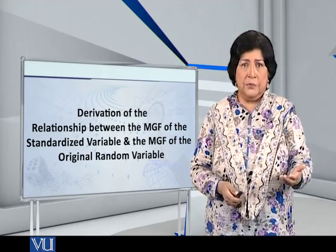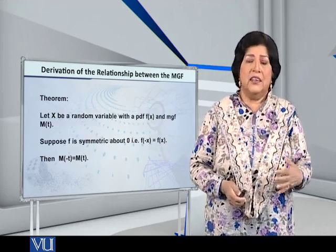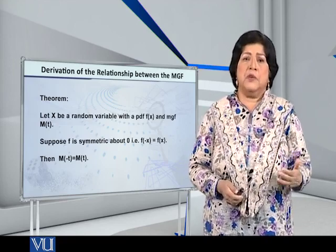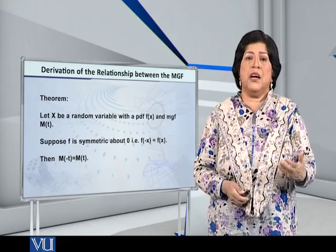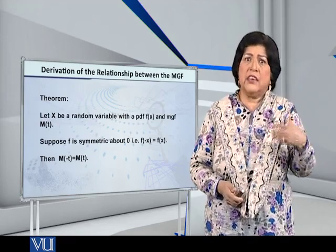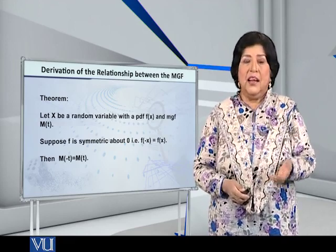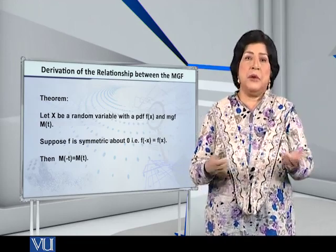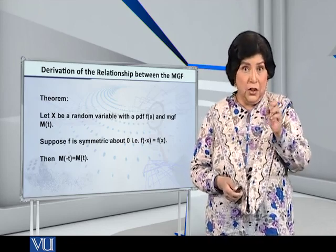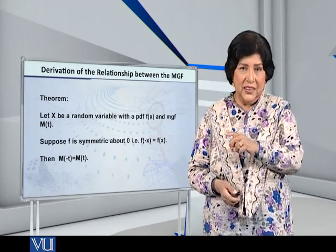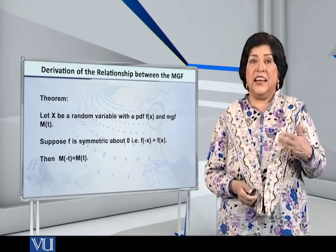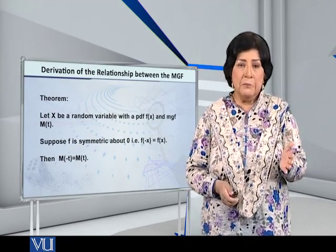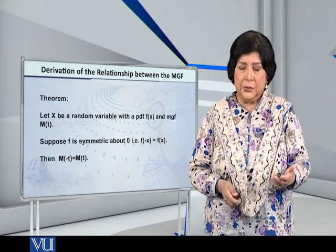The theorem goes like this: Let X be a random variable with a PDF f(x) and MGF M(t). And let f(x), in other words, be symmetric about zero. In other words, f(-x) is equal to f(x). The ordinate against minus X is the same as the ordinate against X, and that's why it is symmetric. So if all this is happening, then M(-t) is equal to M(t).